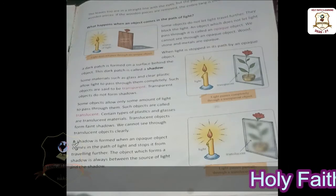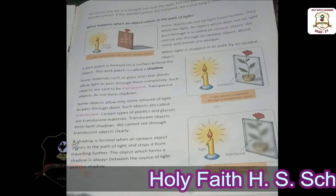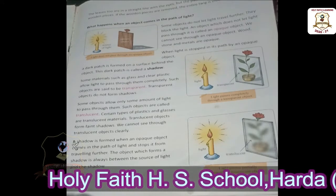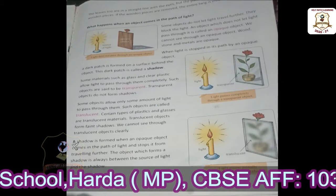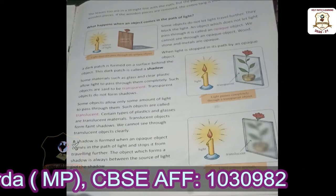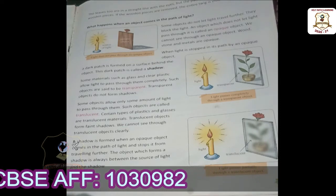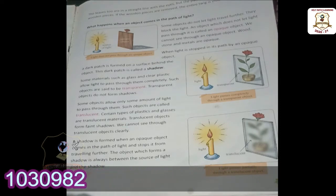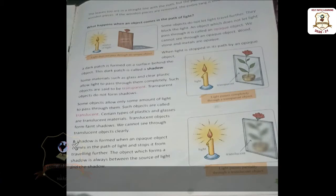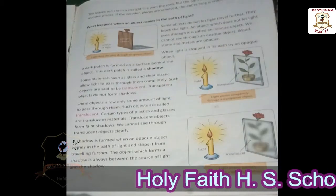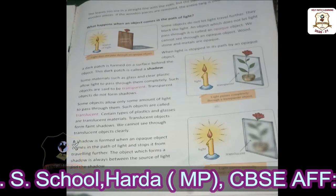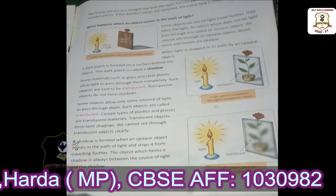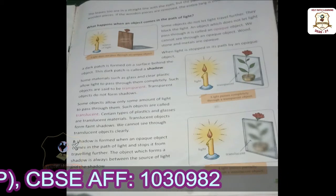Good morning students! Today we continue from the previous class. The name of the chapter is Light and Shadow. We have already learned about the basics of light. Look around you — you can see everything, like this book. You can read this book because there is light. When it is dark, we cannot see anything because there is no light.